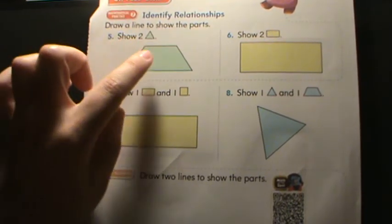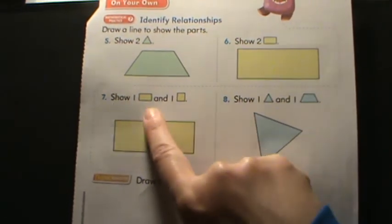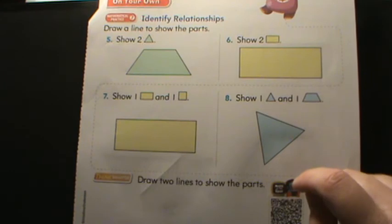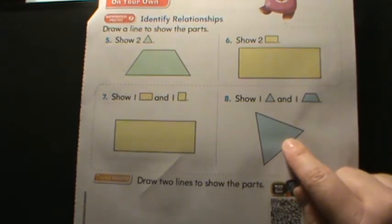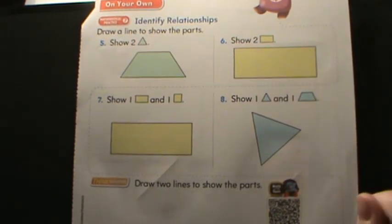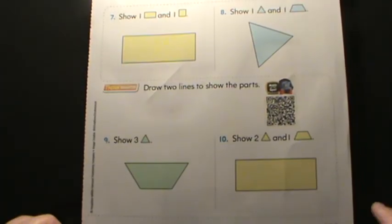We split all of those to break them into other shapes. That's exactly what it's asking you to do on five, six, seven, and eight. They are asking you to draw a line to show two triangles. You have to turn this trapezoid into two triangles. You have to turn this rectangle into two other rectangles. You have to show one rectangle and one square on this one, so be careful how you divide that. You're not going to split it right in half. And then this one to show one triangle and one trapezoid. I just showed you that example with our pattern blocks. If you're not sure, get out your pattern blocks or draw a picture on another sheet of paper and test it out first.